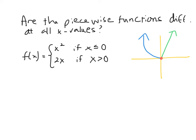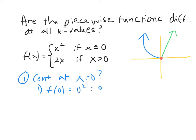The first thing we do is test for continuity at x equals zero. There were three parts to the continuity test. Part one: find the functional value. At zero, it's defined by the first piece, x squared, so f(0) = 0 squared = 0. Part two: analyze the limit as x approaches zero. The left-hand limit uses the first piece: the limit as x approaches 0 from the left of x squared is zero.